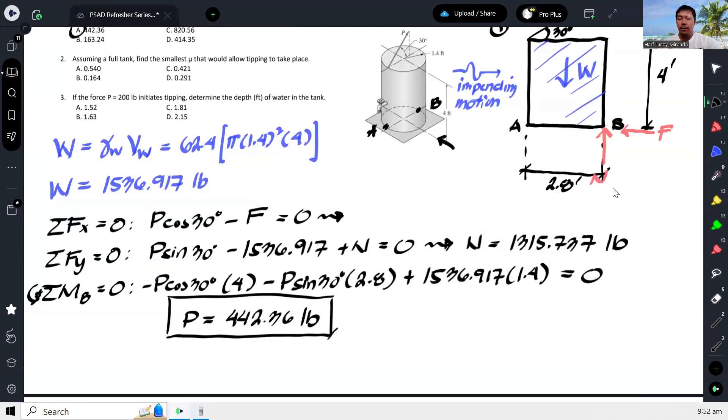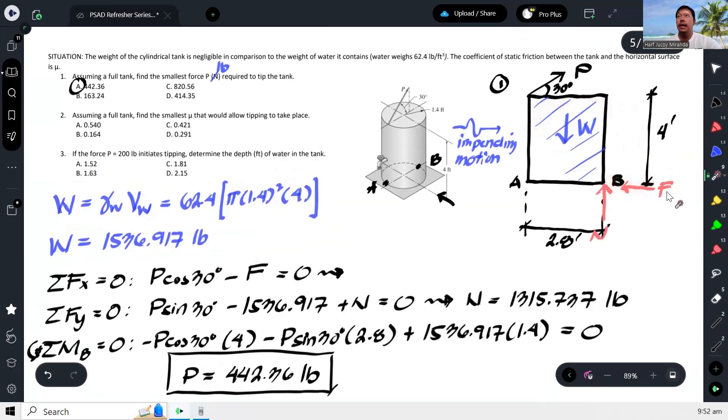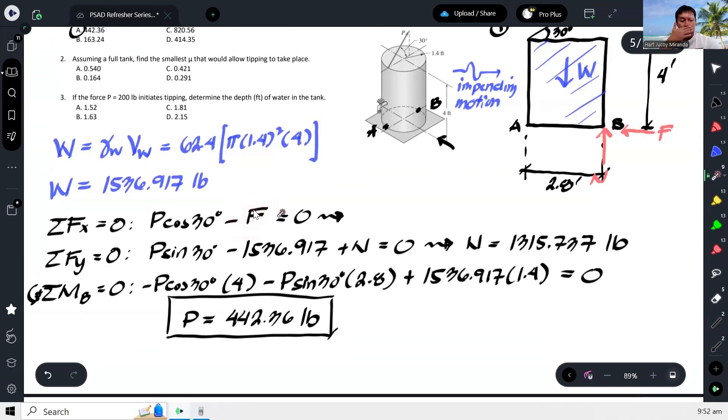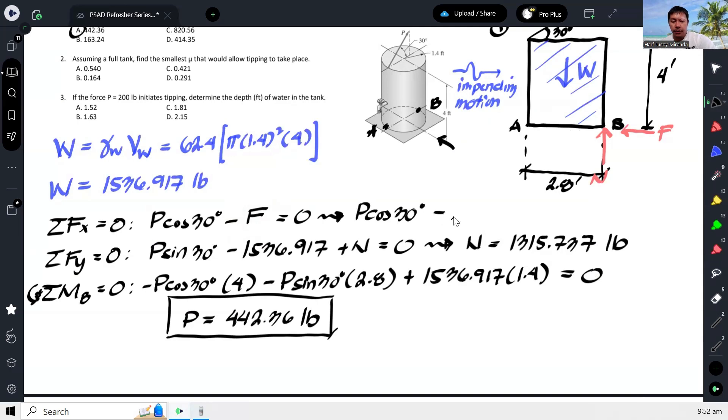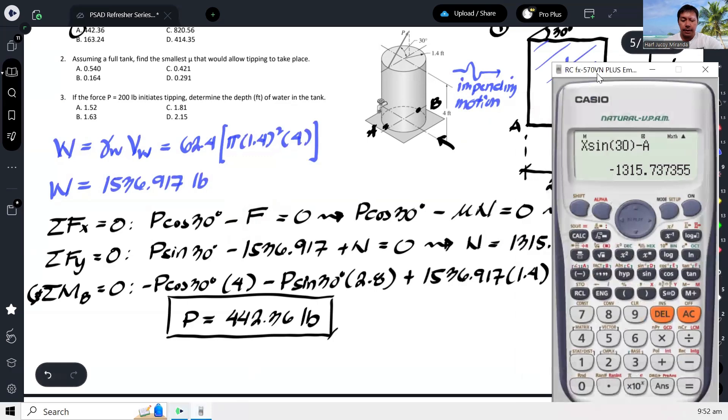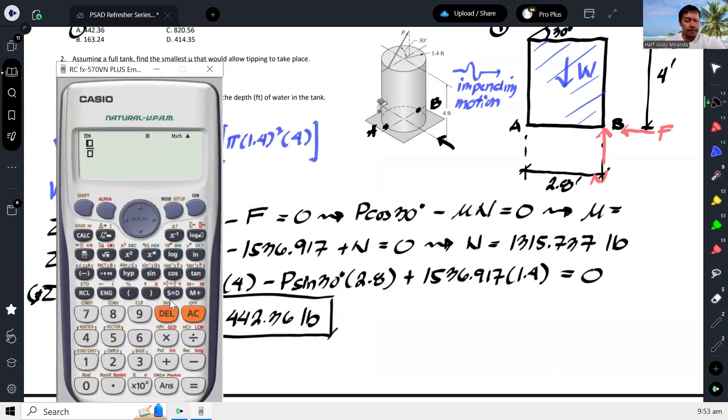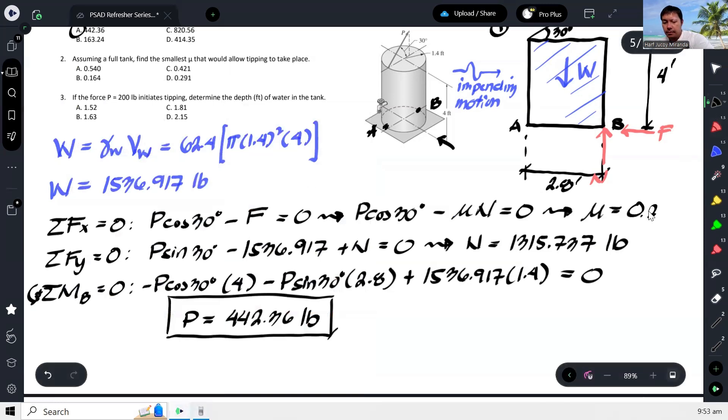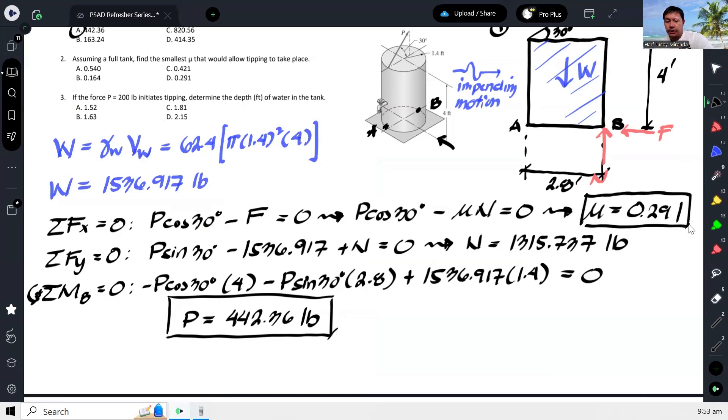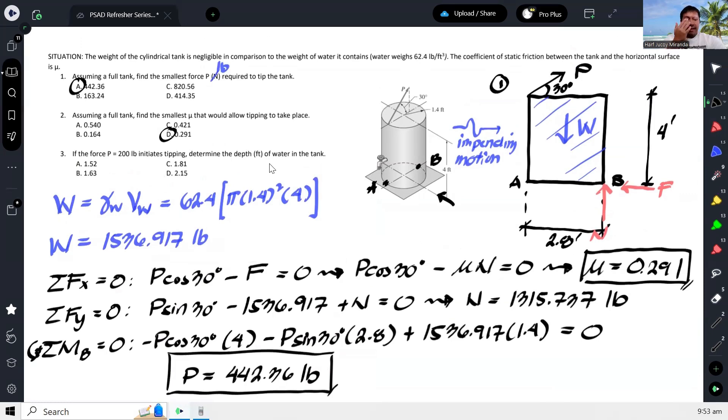And then kapag meron ka ng N, so galing sa summation ng forces X, para ma-compute natin yung required μ. So we will set F, yung friction, to be yung maximum nya which is μ times N. Kasi para matumba to, para matumba yan ng ganyan, kailangan din masagad natin itong frictional resistance. So lumalabas, P cosine 30 minus μ times N is equal to zero. And from here we should be able to calculate for the required coefficient of friction. So we have P cosine 30 divided by N, so that gives us 0.291. And that is the required coefficient of friction, so that is letter D.